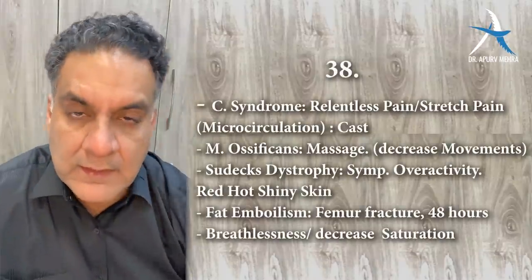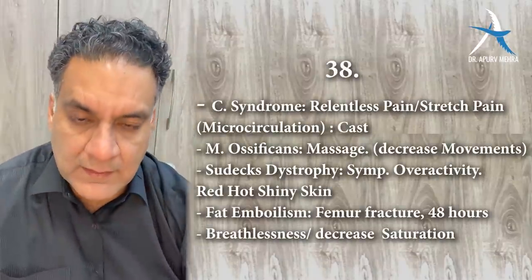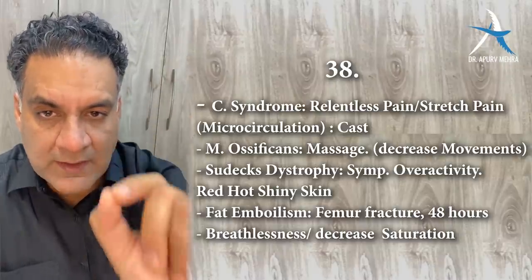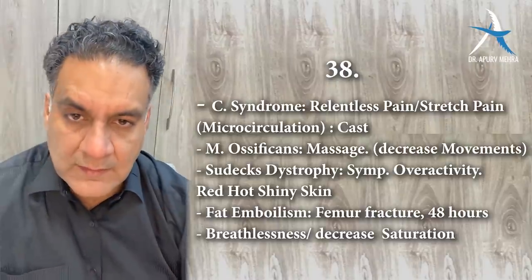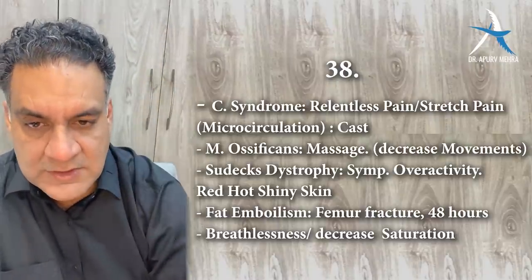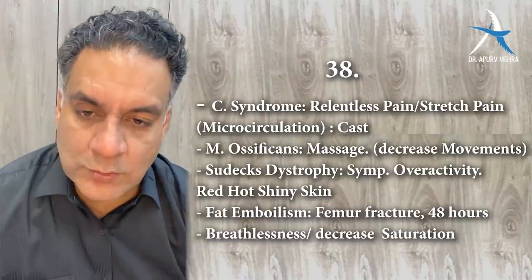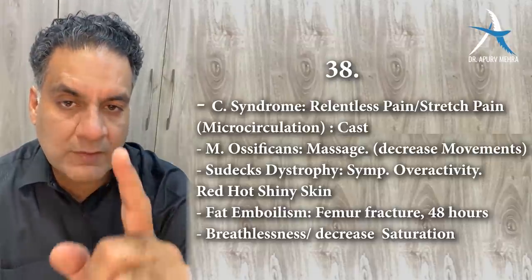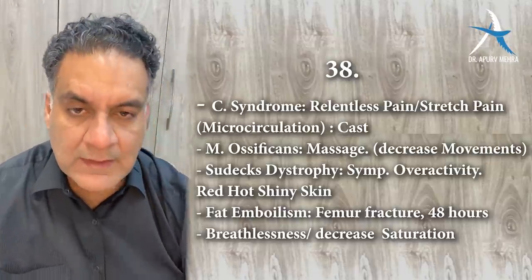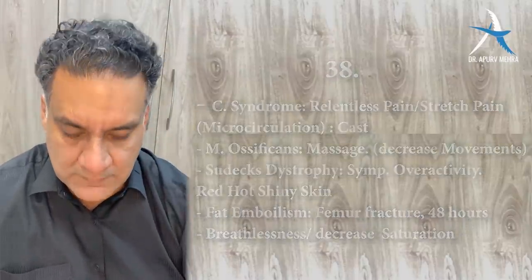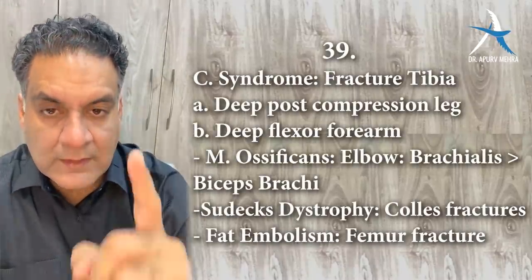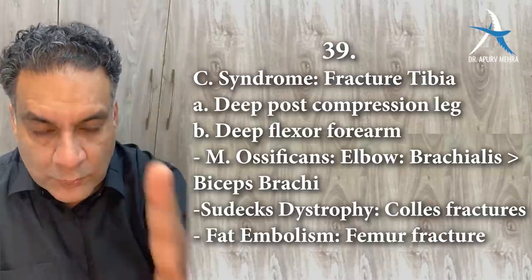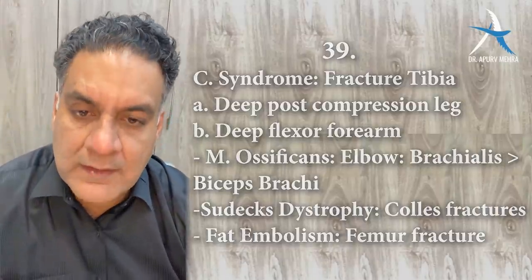Point number thirty-eight: compartment syndrome from a tight cast — there is pain not relieved by anything, and stretch pain. Myositis ossificans — massage worsens it and movement is lost. Sudeck's dystrophy — sympathetic overactivity associated with Colles' fracture. Fat embolism — femur fracture presenting after 48 hours with breathlessness, shortness of breath, and loss of saturation. Point number thirty-nine: compartment syndrome is most common after tibial fractures. Myositis ossificans most commonly occurs around the elbow — the brachialis muscle.